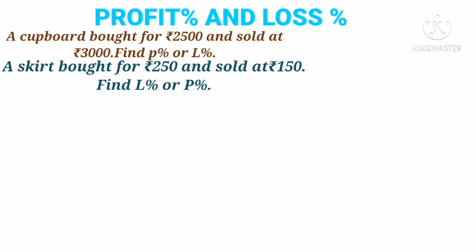Now we have profit percentage and loss percentage. With the help of two examples, we can recall profit and loss percentages. First one: a cupboard bought for rupees 2,500 and sold at rupees 3,000. Find profit percentage or loss percentage. Here SP is greater than CP, so it is profit.